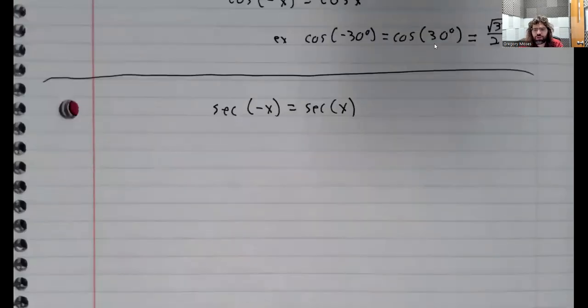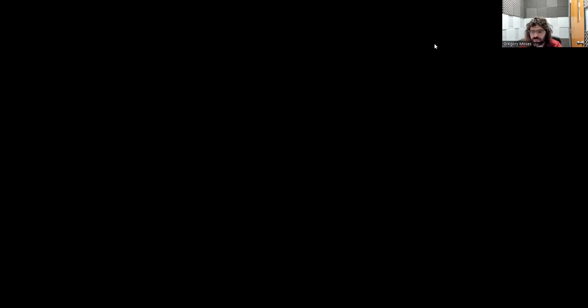For the record, though, of the remaining four trig functions, the secant is even. The secant of negative x is the same as the secant of positive x. Well, the tangent, cosecant, and cotangent are odd. So, the even functions are kind of the anomaly. The cosine and one divided by the cosine are even. The other trig functions are odd.